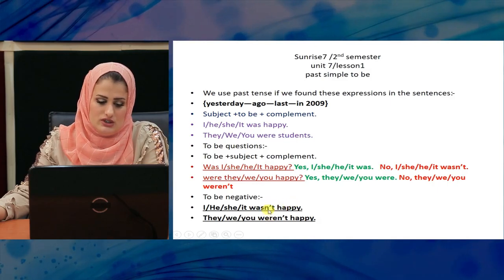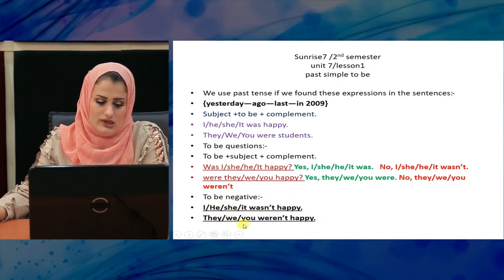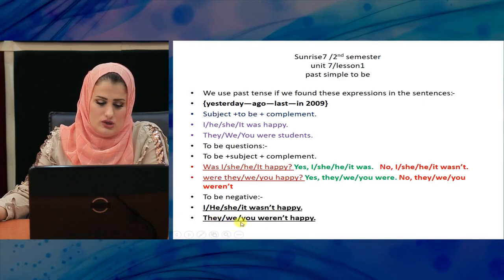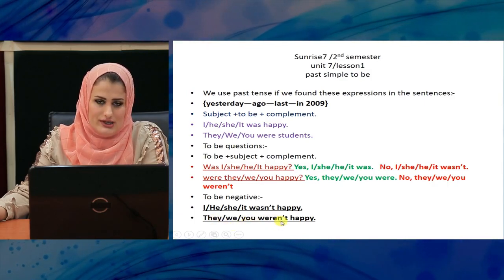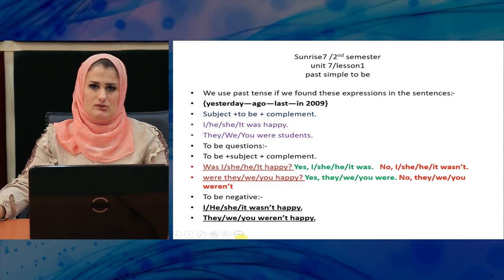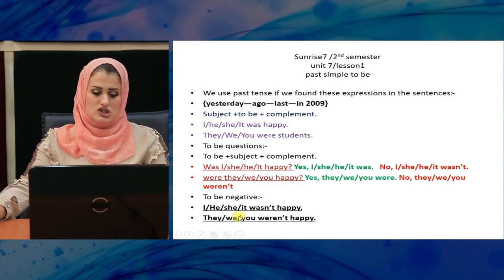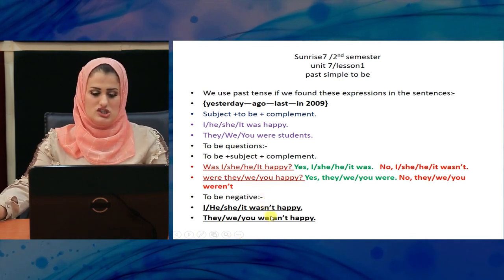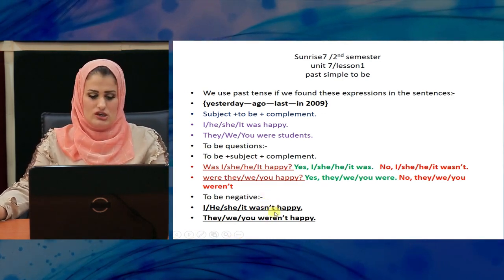Given that: I, he, she — it wasn't happy. They, we, you — weren't happy. It's not correct to say 'weren't' for I/he/she/it — you should say 'wasn't' for those, and 'weren't' for the others.